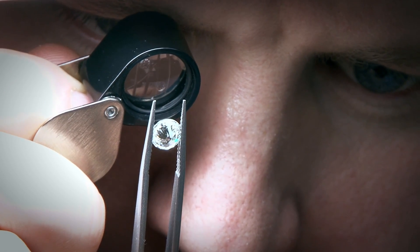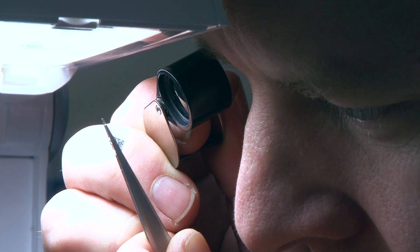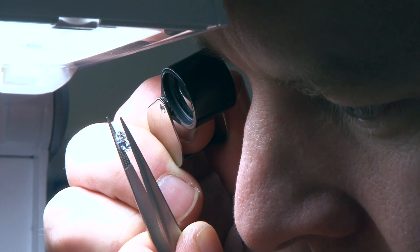When assessing the clarity in a diamond, the fewer impurities or inclusions that are trapped within the structure of the stone, the higher the grade of clarity. But do you need to worry about the different types of inclusion and does this affect the value and the appearance of the diamond?